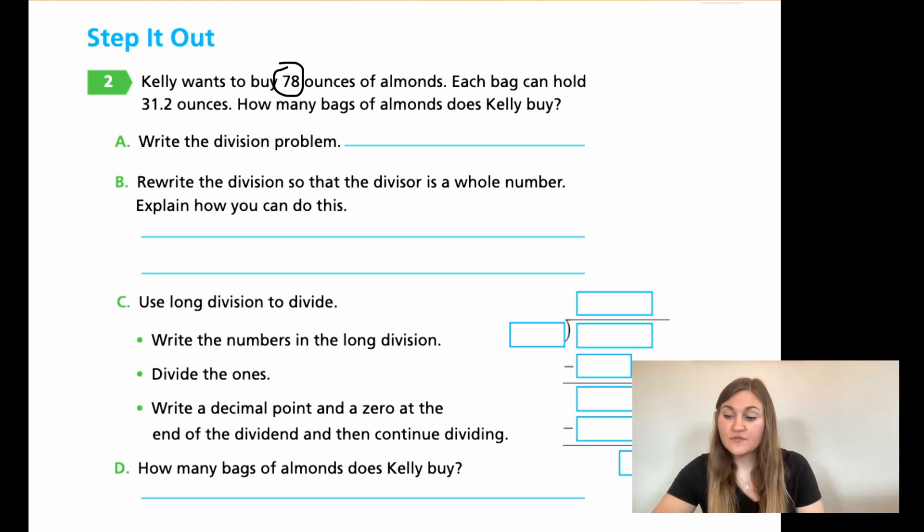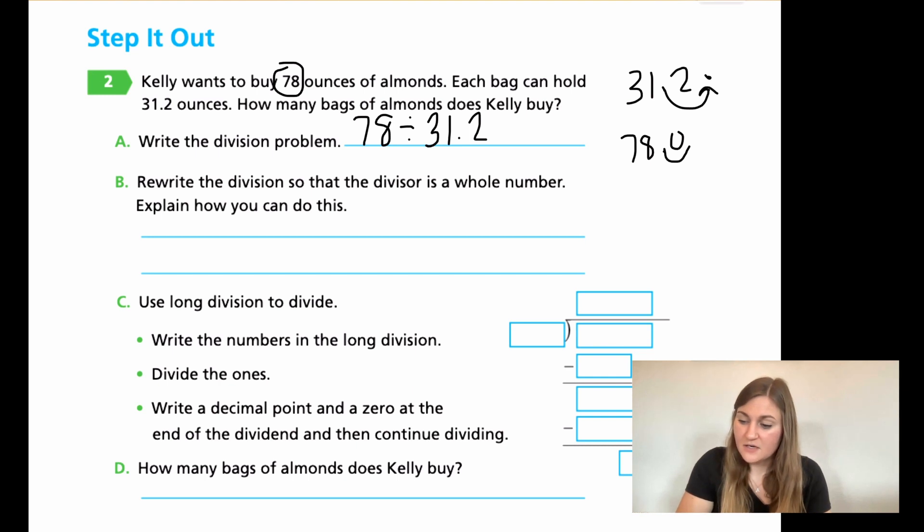Let's go ahead and solve these together. So for A, if I'm writing my division problem, I'm starting out with my 78 and I'm dividing it by the 31.2. Now I want to rewrite my division so that the divisor is a whole number. I want that 31.2 to be a whole number, which means I need to take my 31.2 and I need to move the decimal once this way so that it reads 312. So what I do to one number, I have to do to the other number, which means that I need to take my 78. Remember, there's always a decimal at the end and I still need to make that same hop. So now it's going to be 780. So my new division problem is going to be 780 divided by 312. And I did this by multiplying both by 10.